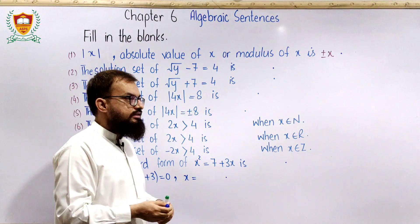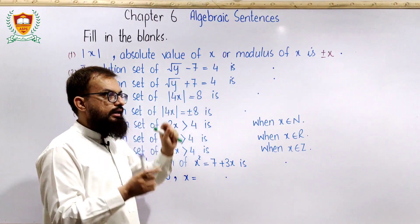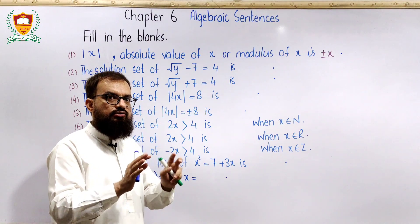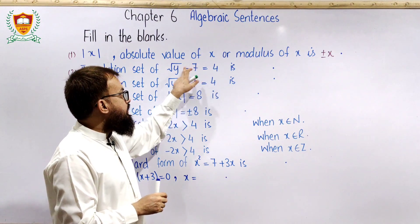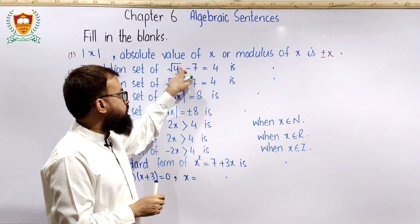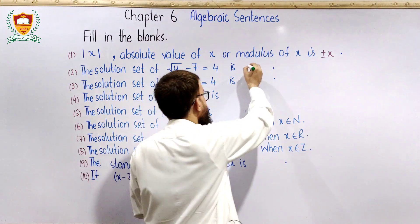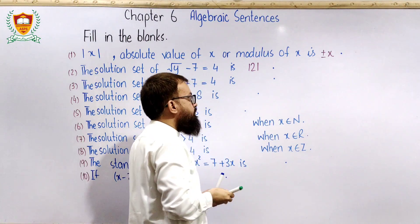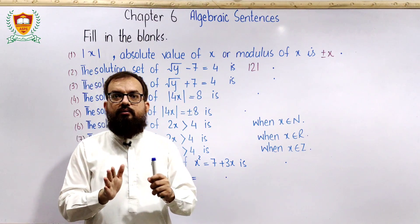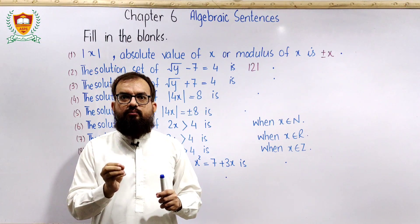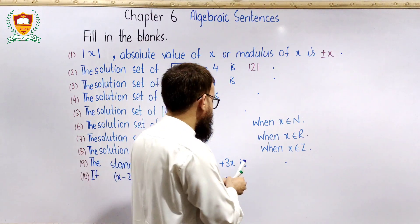اگلا statement: √(y−7) = 4 کا solution set find کرنا ہے۔ پہلے زبانی سمجھتے ہیں — minus 7 آگے جا کے plus 7 ہو گا، 4 + 7 = 11۔ پھر squaring on both sides کریں گے تو square سے root cancel ہو جائے گا اور 11² = 121 آئے گا۔ یاد رہے جب بھی square root والا question ہو، پہلے simplify کریں اور پھر verify بھی کریں۔